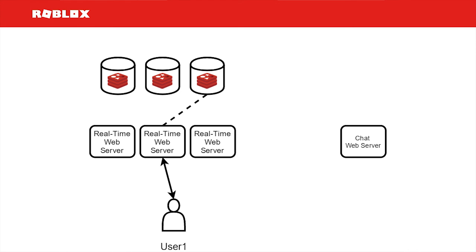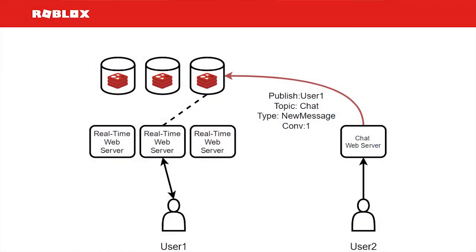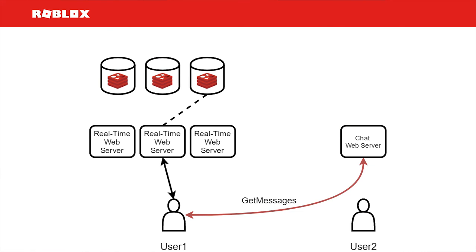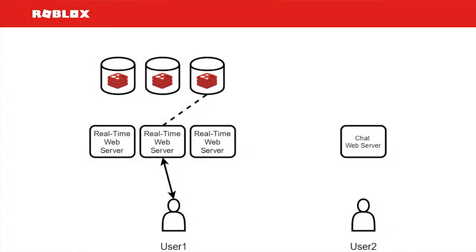User 2 comes along — a friend of User 1 — and wants to send a message. They hit one of our chat web servers, which does whatever it needs to update the chat system and then publishes to Redis on User 1's channel: there's a topic, there's a message, it's about chat, there's a new message in conversation 1. Redis relays that to the subscribing web server. The web server pumps that message into the SignalR connection, and SignalR relays it to the client. User 1 can then hit the chat server for the new messages, update the UI, and immediately knows they have a new message.